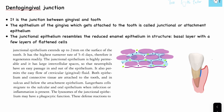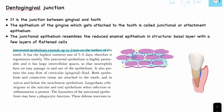The junctional epithelium has a basal layer with a few layers of flattened cells. It extends up to 2 mm on the surface of the tooth.